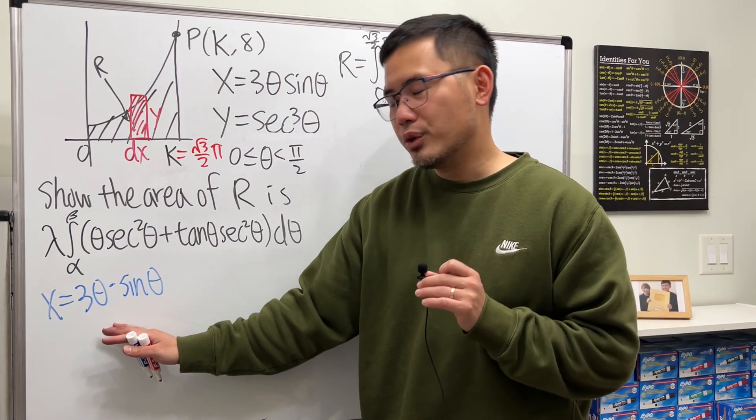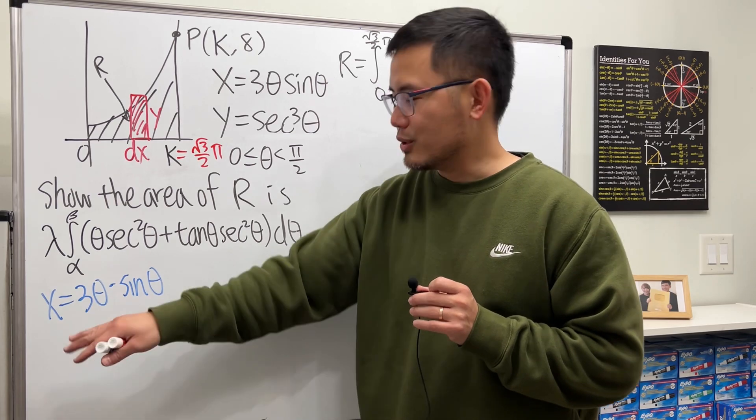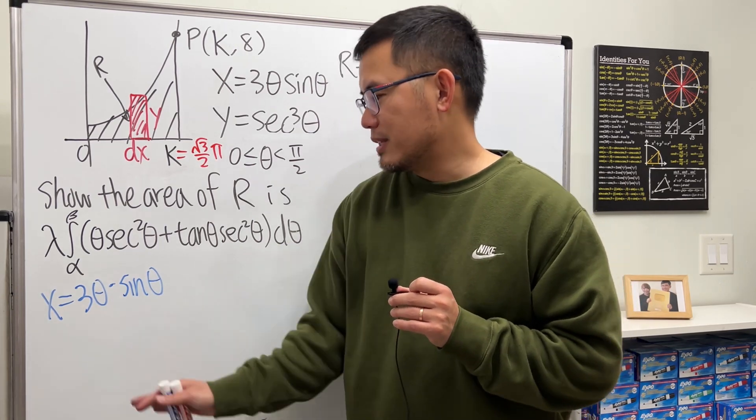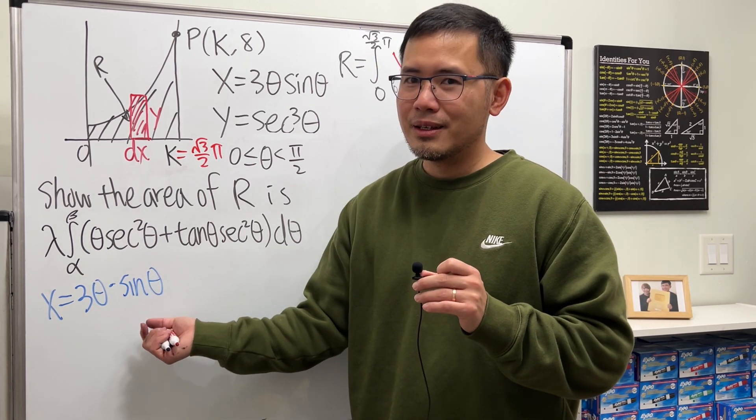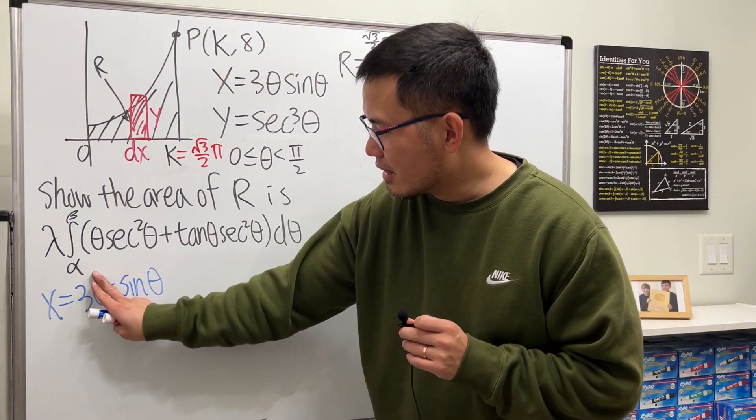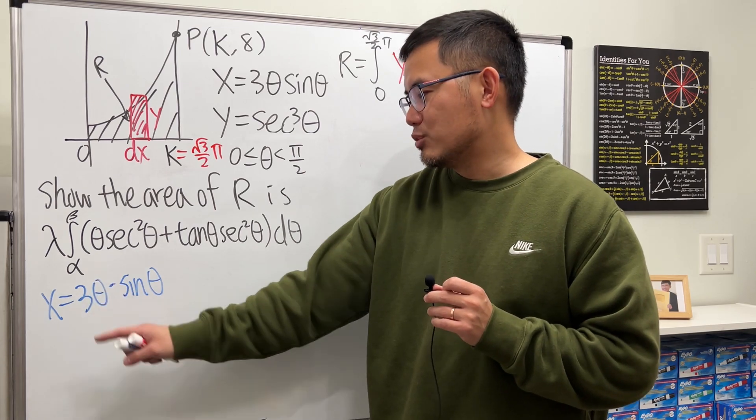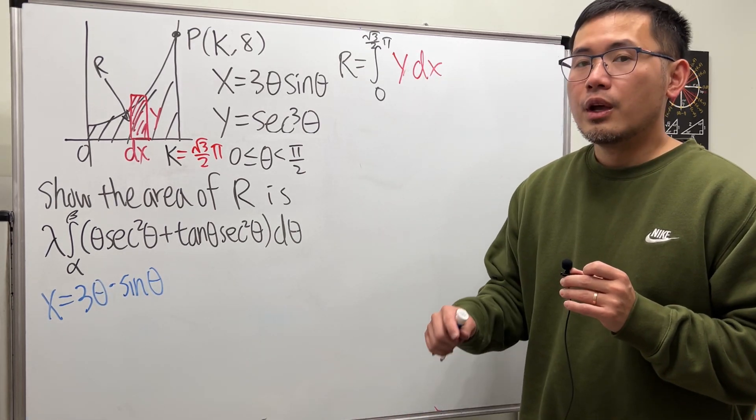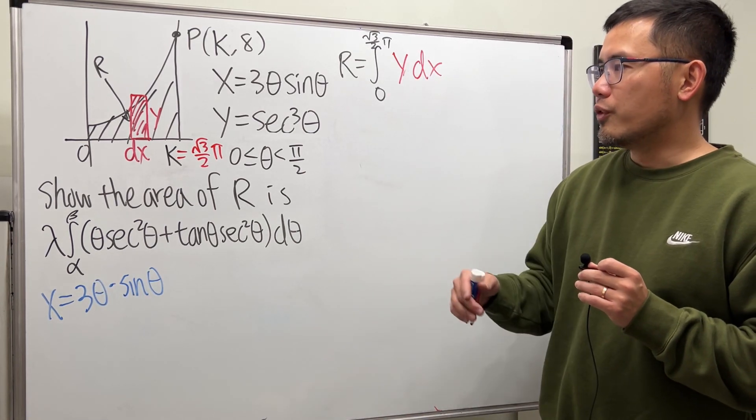No matter what you do, you cannot isolate theta. You can try it - divide both sides by 3θ, take the inverse sine, but you still have theta on both sides. If we didn't have the theta, it's possible, but since this problem is like this, we really have to work this out from the parametric way.